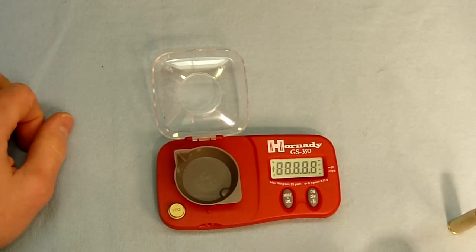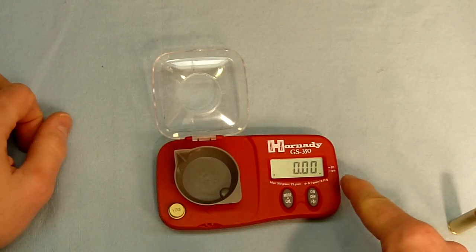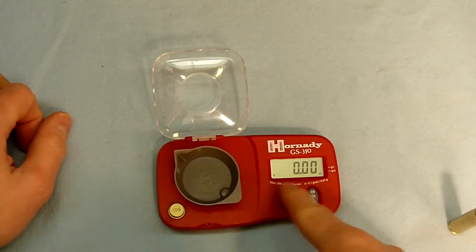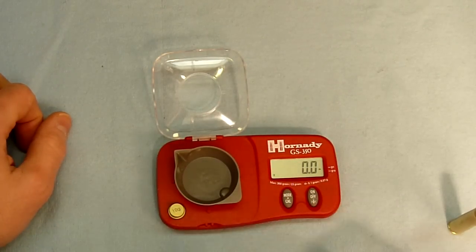So when we turn the scale on, we notice that we can either display weight in grains or grams. Right now we're running grams. We can switch over to grains by hitting the mode button.